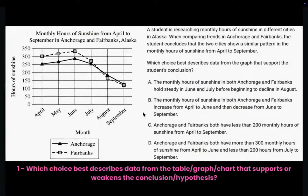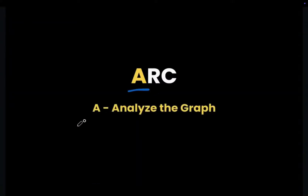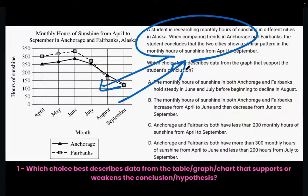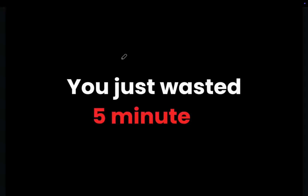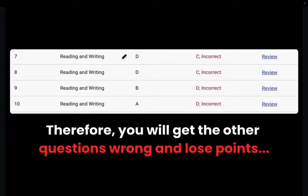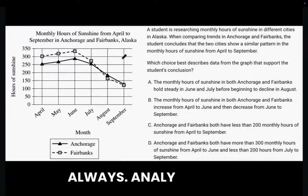The first type asks: which choice best describes data from the graph that support the student's conclusion? This means it's a supporting question. Following the ARC method, we need to always start with A — analyze the graph. If you read the text before the graph, you'll waste five minutes going back and forth. You'll lose focus and time because certain things make much more sense when presented using visuals like graphs and charts beforehand. So always, just always analyze the graph first.